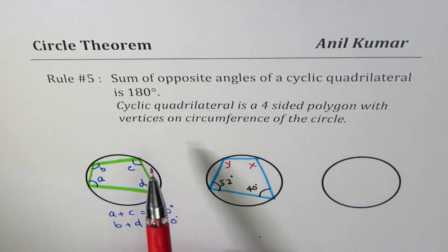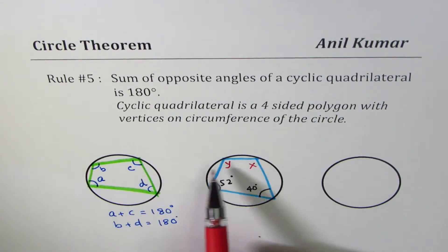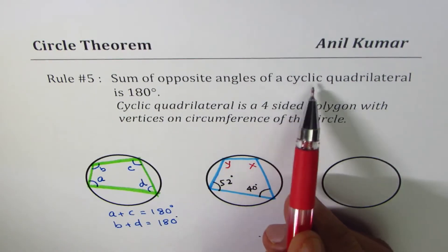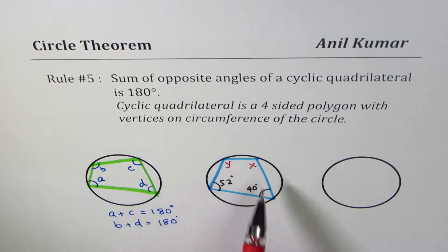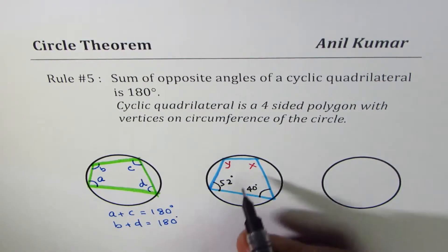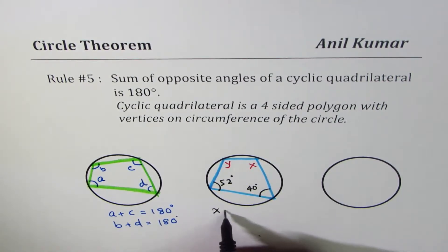Now applying the rule that if we have an inscribed quadrilateral—that is to say cyclic quadrilateral—with four vertices on the circumference, then sum of opposite angles is 180 degrees. Using this rule, we can find what x is. X should be equals to 180 degrees minus 52 degrees.